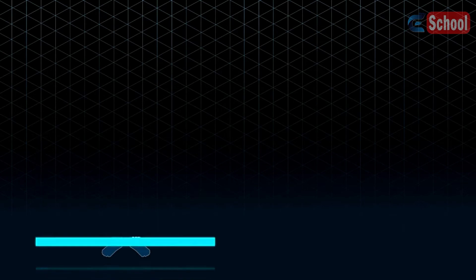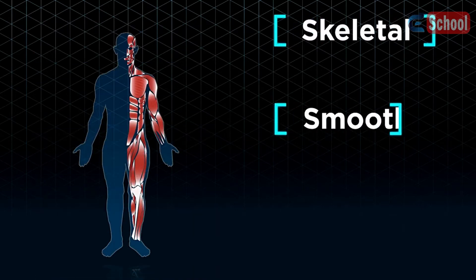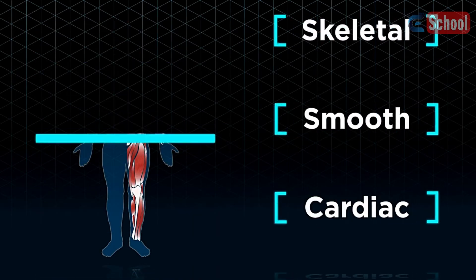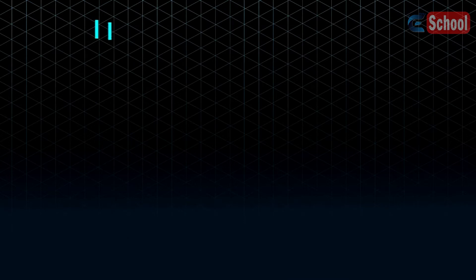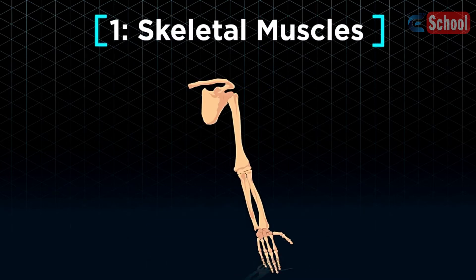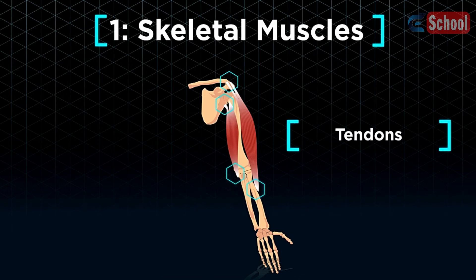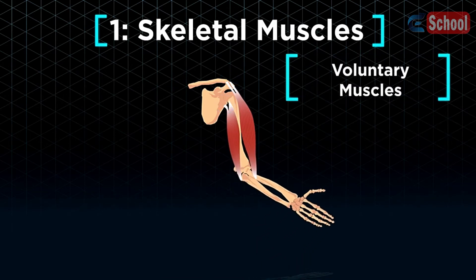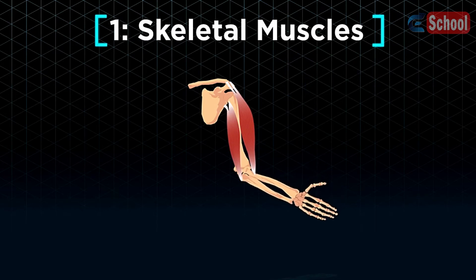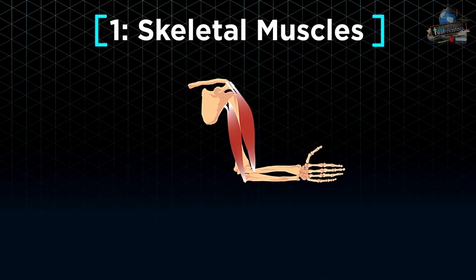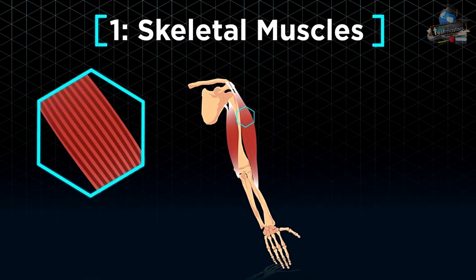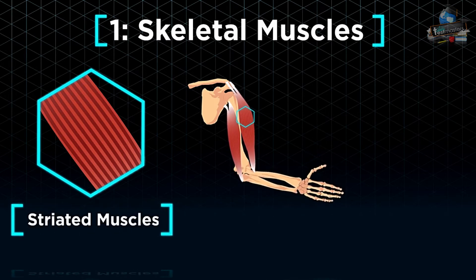There are three types of muscles in our body – skeletal, smooth and cardiac. Skeletal muscles, as suggested in their name, are attached to our skeleton or bones via tendons. As we control their movement, they are also known as voluntary muscles. Their striped appearance gives them yet another name – striated muscles.